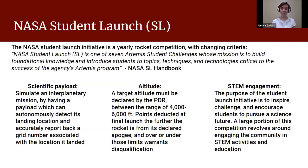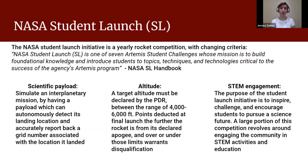For the scientific payload, the mission was to simulate an interplanetary mission — our rocket needed a payload that could autonomously detect where it landed and report back without human interference, GPS, or anything like that. This is similar to a Mars mission where a rover would have to report its landing location. For altitude, in our preliminary design review we declared a target altitude between 4,000 and 6,000 feet. Being below 4,000 or above 6,000 would result in disqualification. STEM engagement focused on inspiring students to think critically and work on challenging problems.